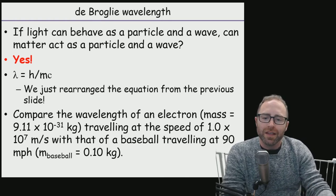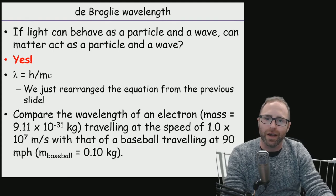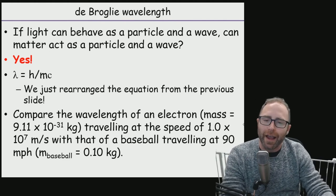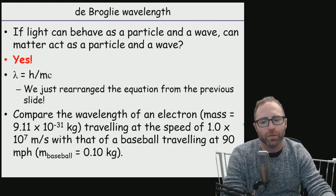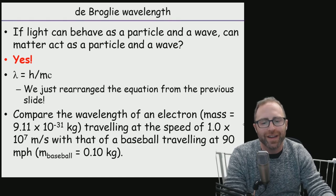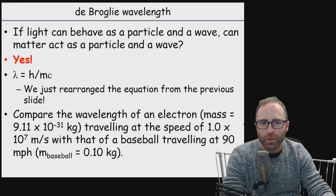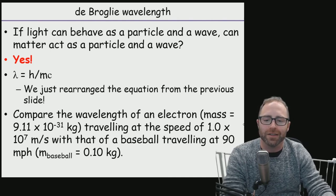But for the case of an electron, we have something that's really small. Look at how tiny that little thing is. It's so small. And it's traveling really, really fast. One times 10 to the seventh meters per second. This is now something where that wave-like property might actually be significant.